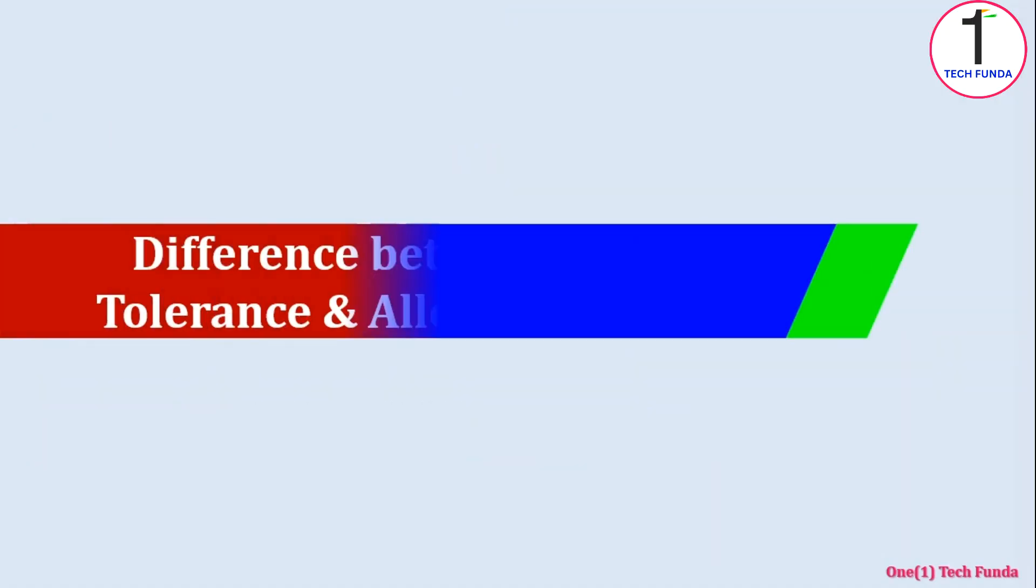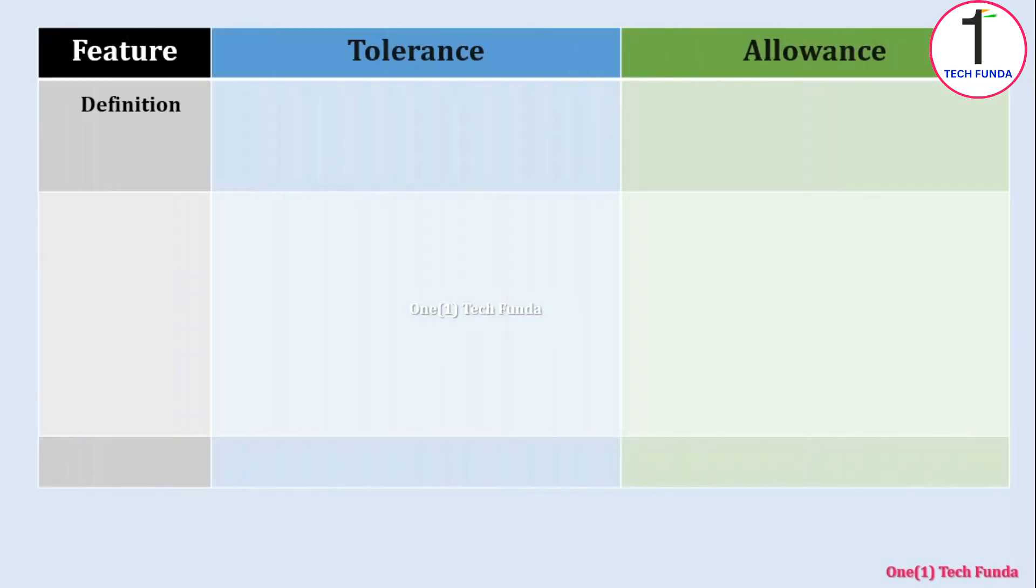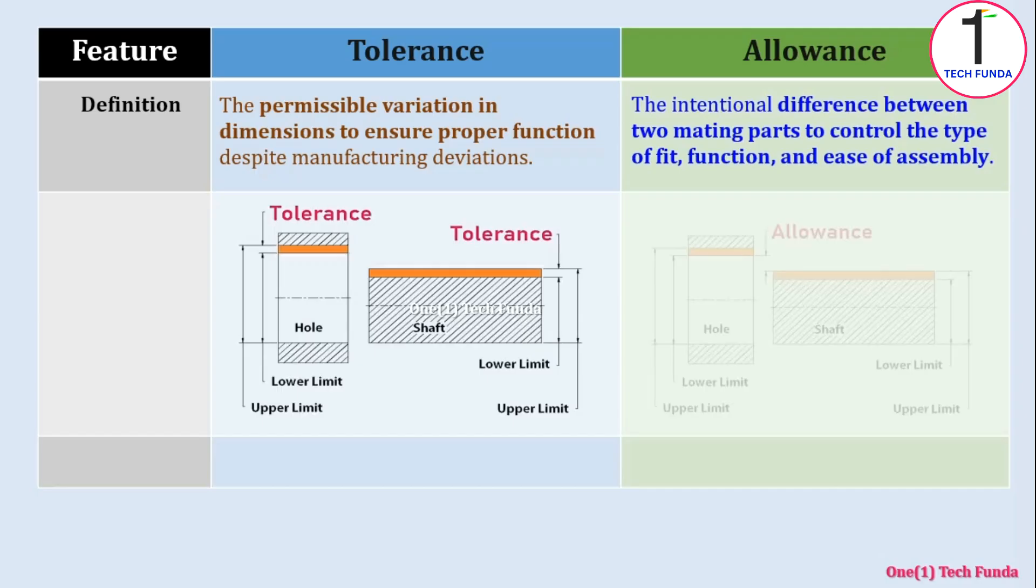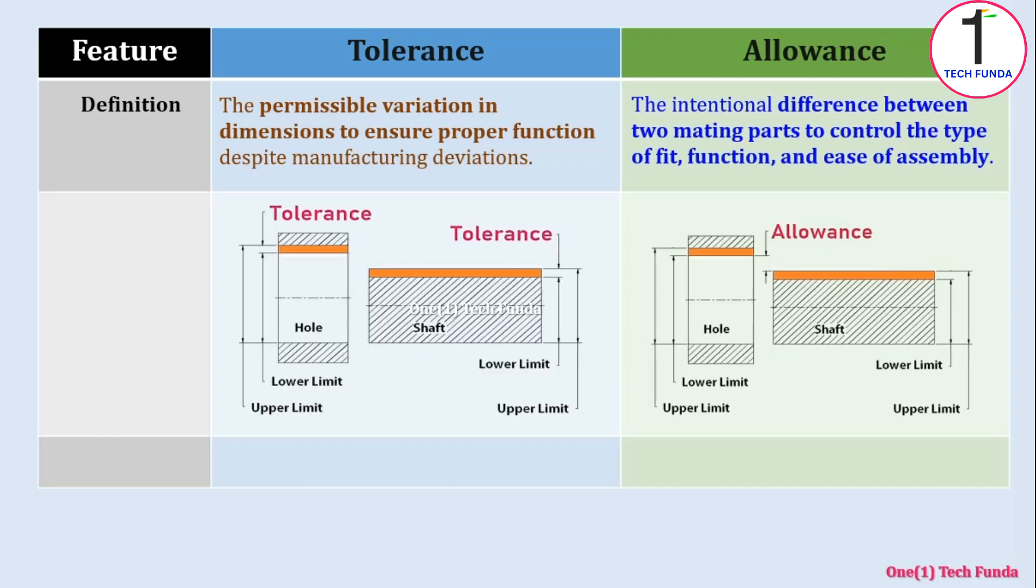Now let's see the difference between tolerance and allowance. Tolerance is the permissible variation in dimensions to ensure proper function despite manufacturing deviations. Allowance is the intentional difference between two mating parts to control the type of fit, function, and ease of assembly. Tolerance is an absolute value. Allowance may be positive or negative.